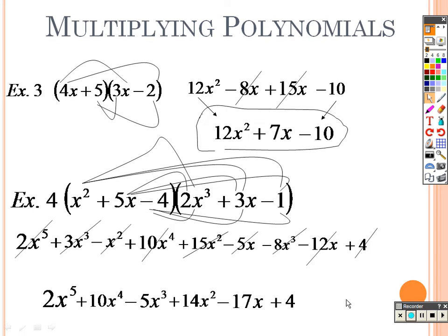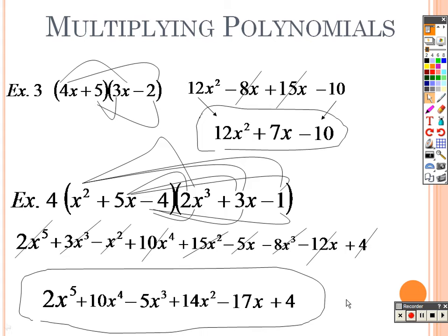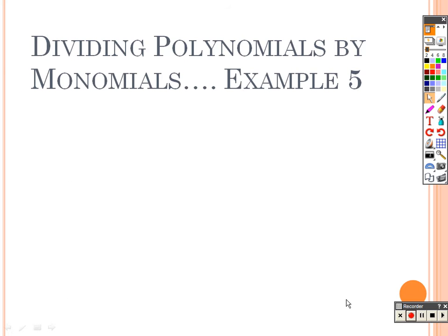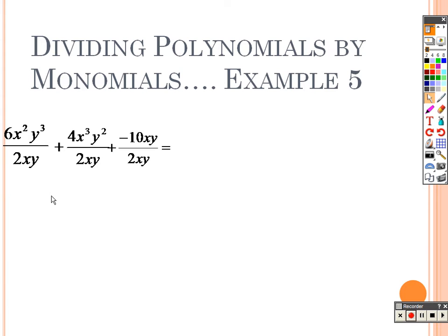Let's continue on here with the next examples. Alright, dividing polynomials now. When you're dividing polynomials, it's kind of like grouping things together. So when we're grouping, I want to start with just the numbers here first. And the numbers that I have are a 6 and a 2. So just picture this as if we are trying to simply divide everything together.